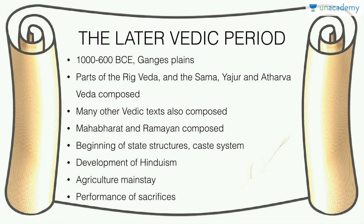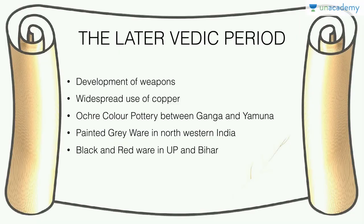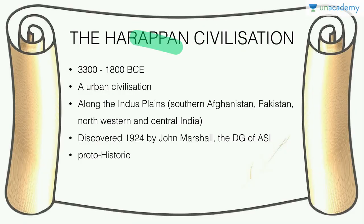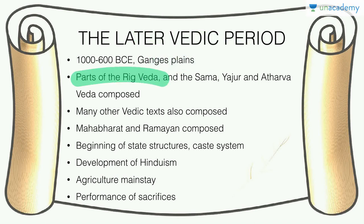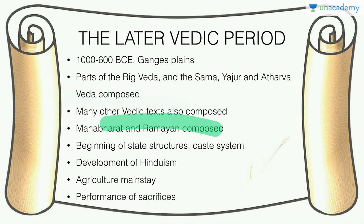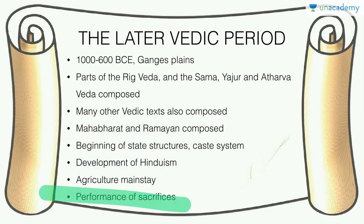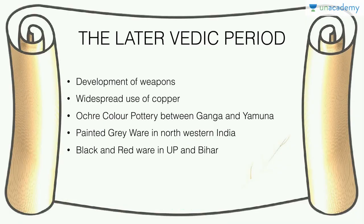After the decline of the Harappan Civilization, the Rig Veda was written and there were hunter-gatherer societies again, around 1500 to 1000 BCE. In the later Vedic period, settlements formed around the Ganges plains. The Sama, Yajur, and Atharva Vedas were composed, along with other Vedic texts and epics like the Ramayana and Mahabharata. Beginnings of social structure, the caste system, and development of Hinduism were happening. Agriculture became the mainstay, sacrifices began, and there was development of weapons, use of copper, and various types of pottery.